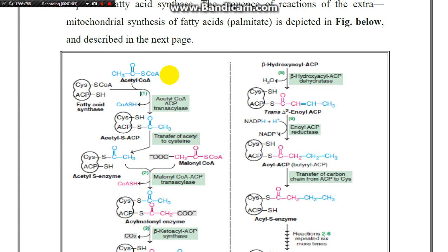The second stage in fatty acid synthesis is the production of malonyl CoA. The third stage involves transferring acetyl CoA to the acetyl carrier protein synthase by the acetyl CoA-acyl carrier protein transacylase.